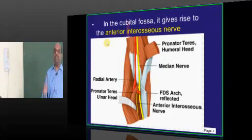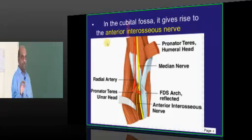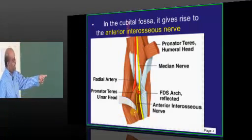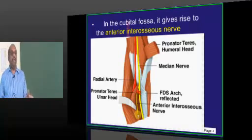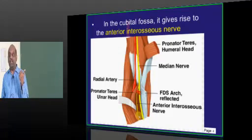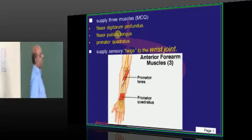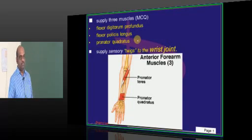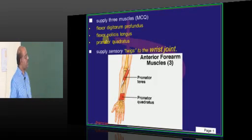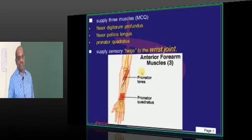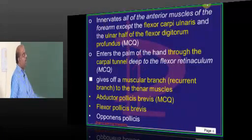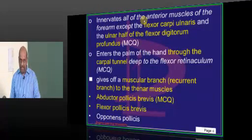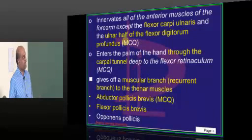What are the branches? In the arm it does not give any branches, but in the forearm, in the cubital fossa, it gives rise to anterior interosseous nerve as a branch. So if there is an anterior interosseous nerve, there should be posterior interosseous, which should be branch of radial. Excellent. What are the three muscles that it supplies in the forearm? Flexor digitorum profundus, pronator quadratus, flexor pollicis longus, and it supplies sensory twigs to the wrist joint. In fact, most of the forearm muscles are all by the median nerve. All the anterior muscles of the forearm are innervated by the median except the flexor carpi ulnaris and the ulnar half of the flexor digitorum profundus.